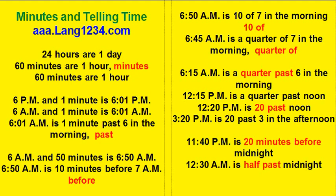Six forty-five a.m. is a quarter of seven in the morning. Six fifteen a.m. is a quarter past six in the morning.